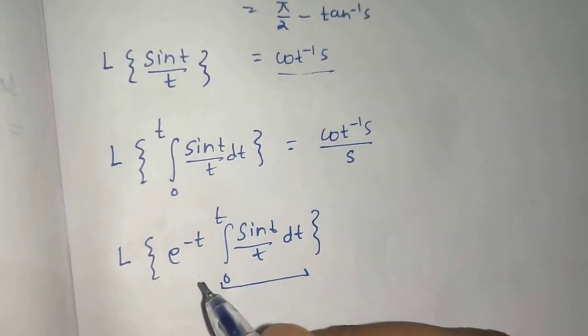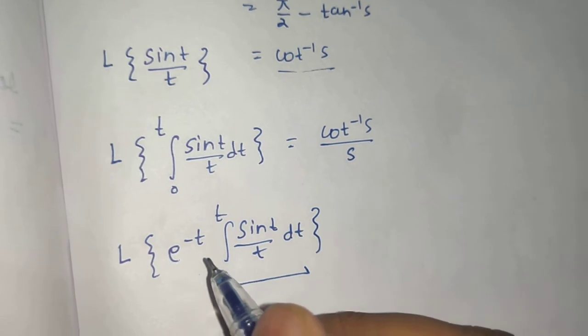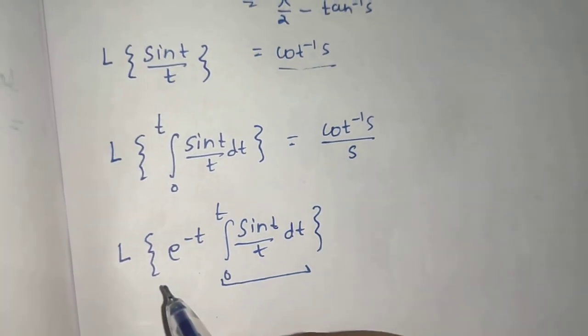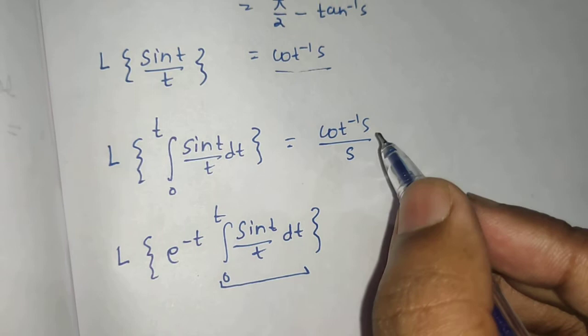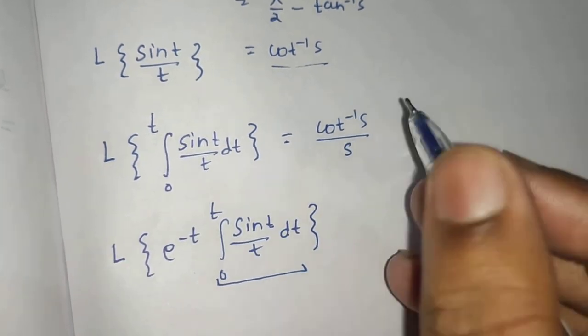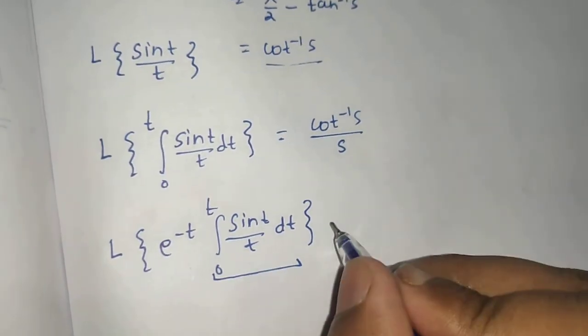We know the Laplace till this portion which is cot⁻¹(s)/s. What the first shift says is that if you are multiplying by e^(at) and then finding the Laplace, simply replace s by s - a.